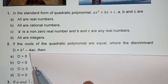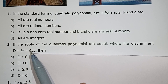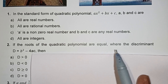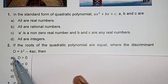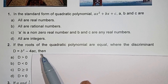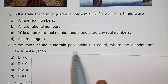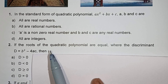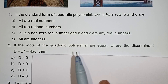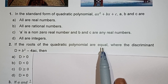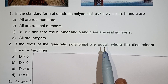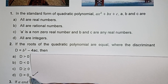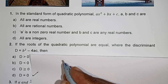If the roots are equal, the discriminant D equals b squared minus 4ac. The discriminant value is equal to 0. If the roots are equal, then the discriminant value is equal to 0.